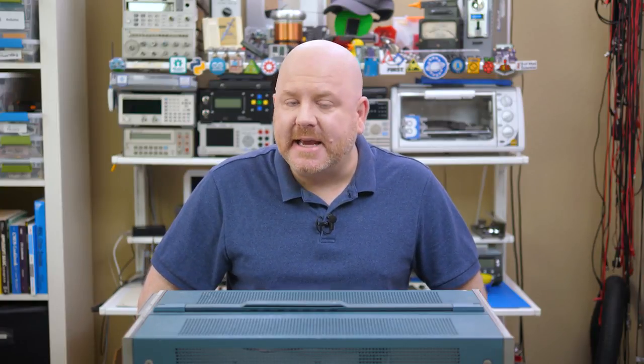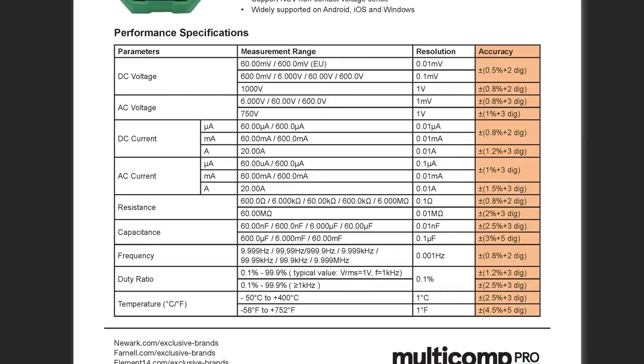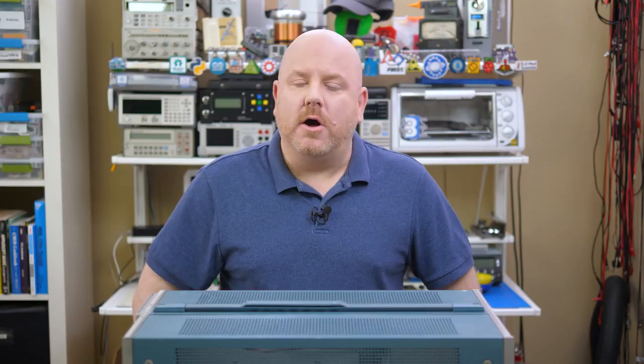Like many data sheets, looking at one for a multimeter can be confusing. You might see terms like digits, counts, and accuracy stated with all kinds of math symbols. In this episode we talk about what all of those mean, which you should care about, and how they relate to a DMM's accuracy.